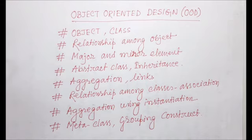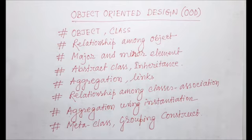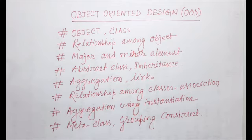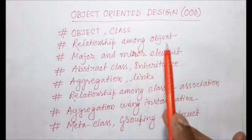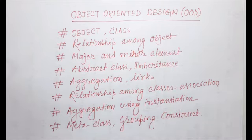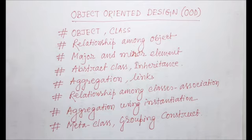Today I will discuss the object class and relationships among objects, major and minor elements, and abstract class. I will discuss these things with the help of a class diagram, which is very important. Before going into details, please follow the previous lecture to understand what inheritance means. I will also talk about abstraction, abstract class, inheritance, aggregation, links, associations, and relationships among classes.